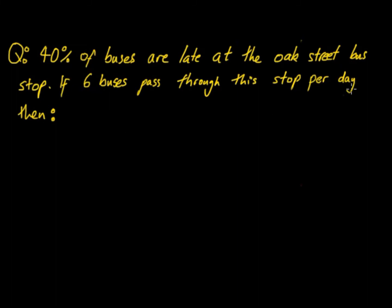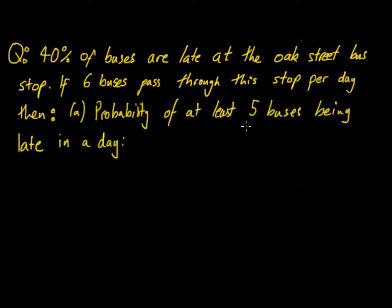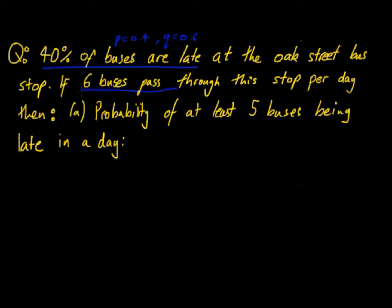The easiest way to show this is through an example. The question is: 40% of buses are late at the Oak Street bus stop. If six buses pass through this stop per day, calculate the probability of at least five buses being late in a day. First, identify the important points: 40% of buses are late, so probability P equals 0.4 for late, and Q equals 0.6 for on time. Six buses pass through per day, so N equals 6.